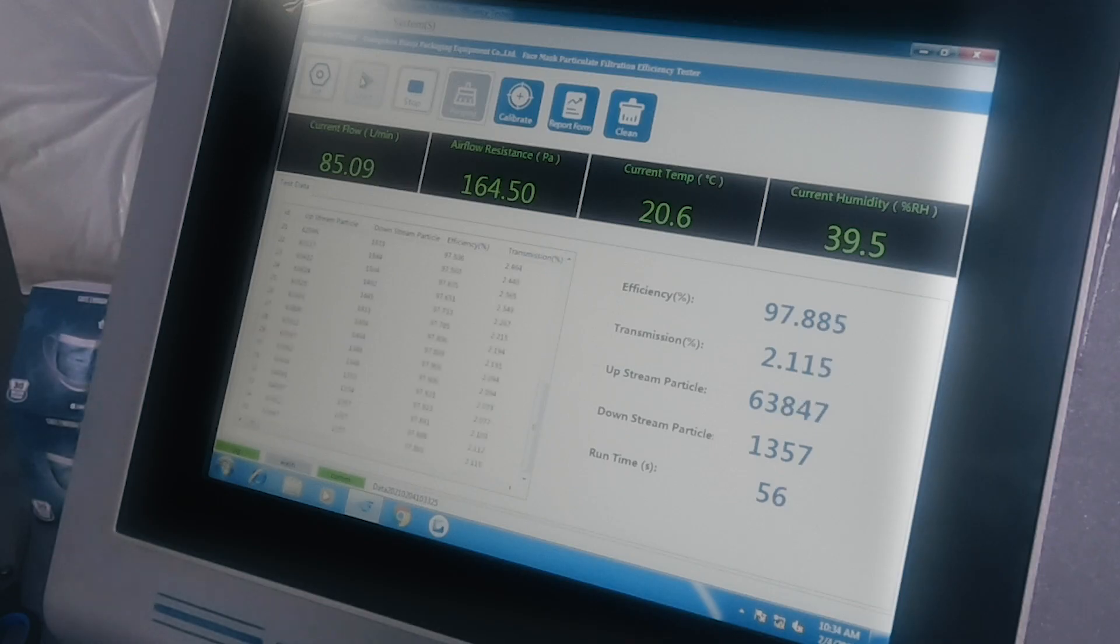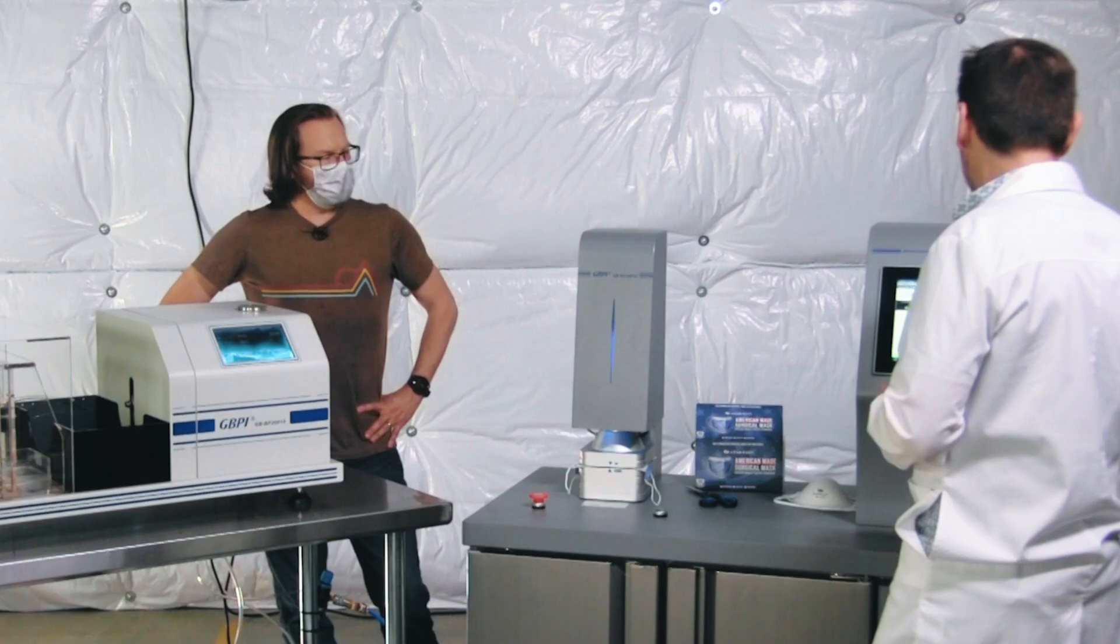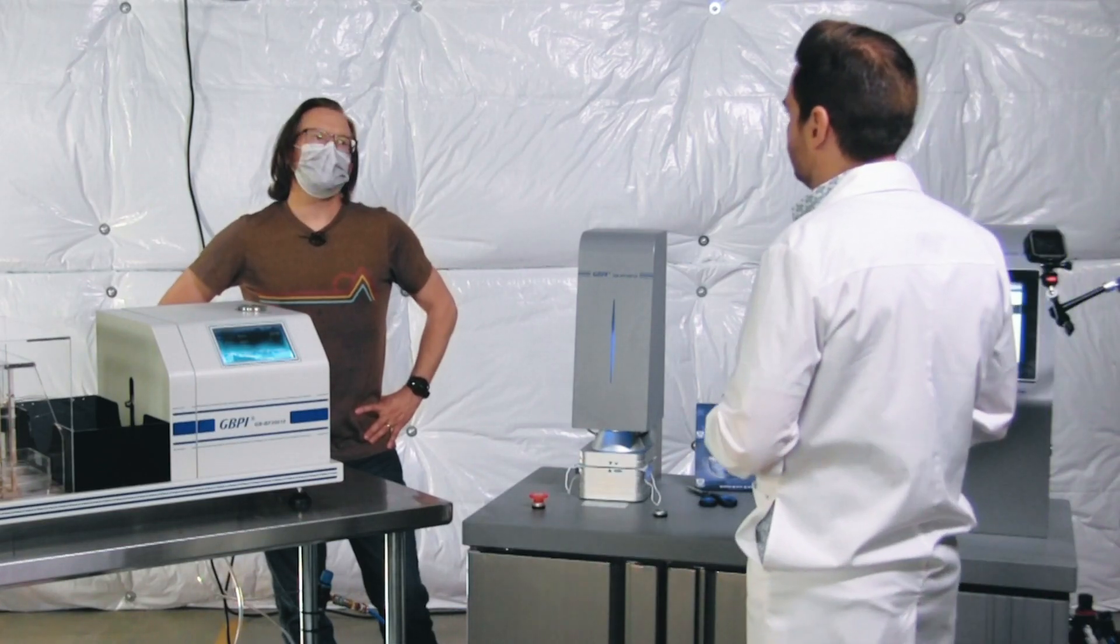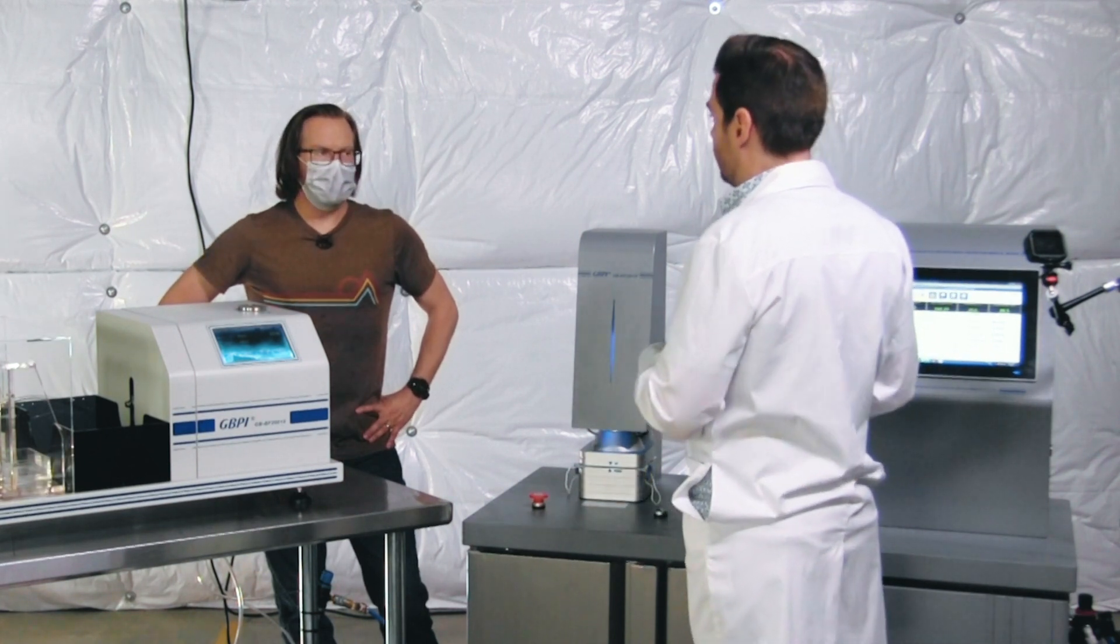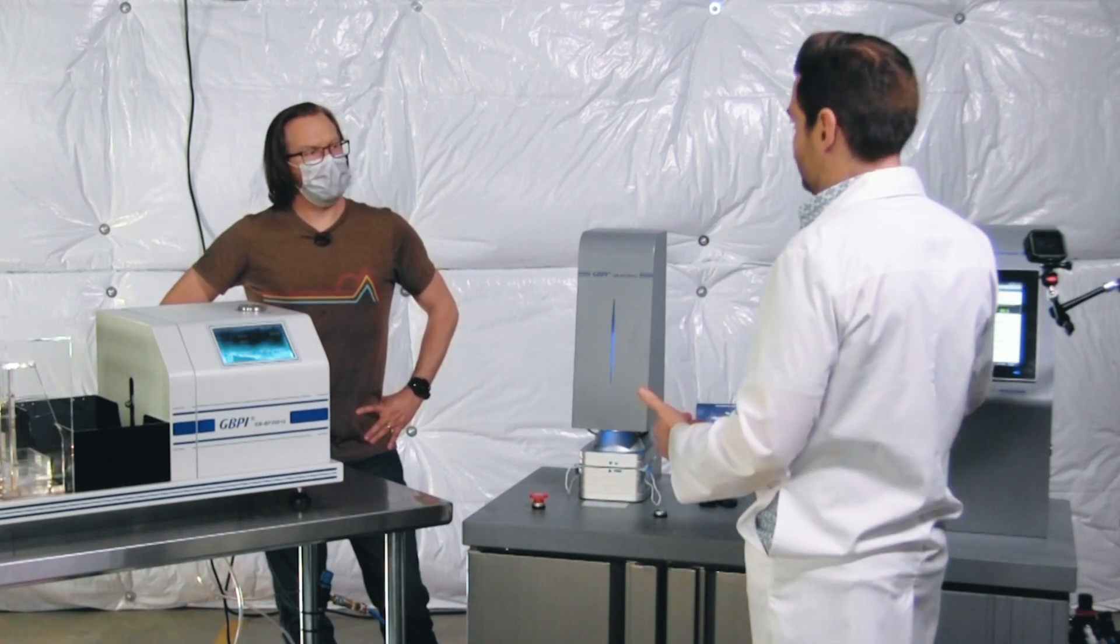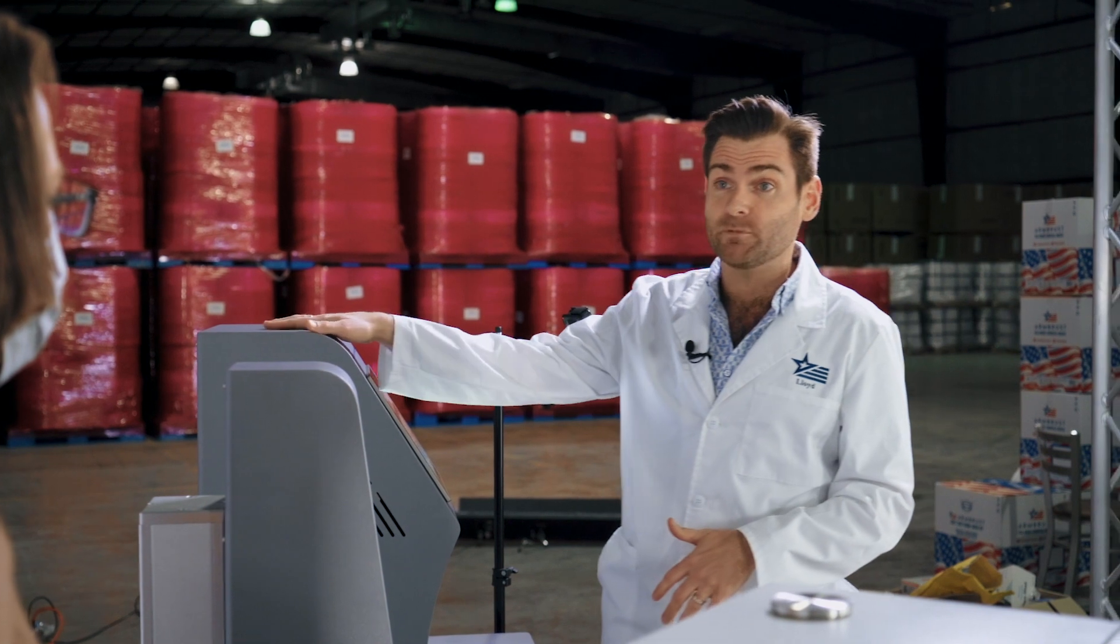So we're at 97.8 right now. And again, we're almost halfway through the test, and so that is going to continue to jump up and down. To pass the ASTM level three, which our masks are, you have to be above 98% filtration. This is a lab machine and it is registered. Of course, you're not allowed to take your own results. Just because I'm wearing a lab coat doesn't mean that I'm a certified lab technician to do this.